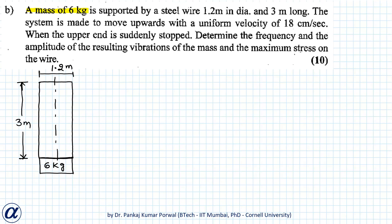In this question a mass of 6 kg is supported by a steel wire of 1.2 meter diameter and 3 meter length. The system is made to move upward with a uniform velocity of 18 centimeter per second.